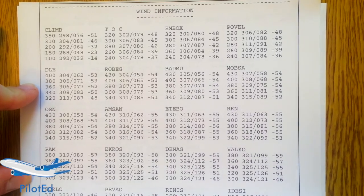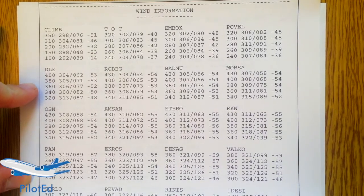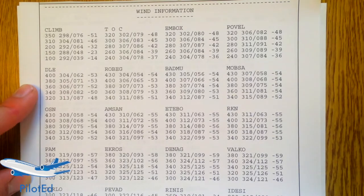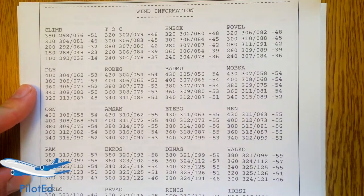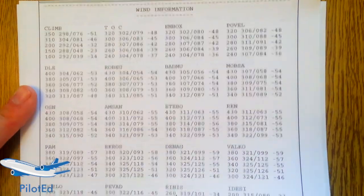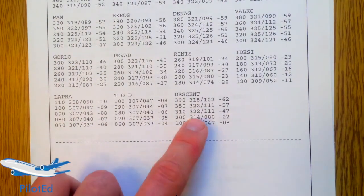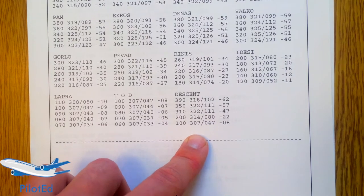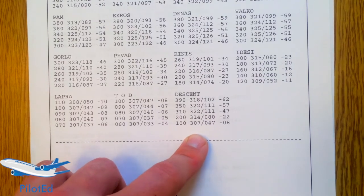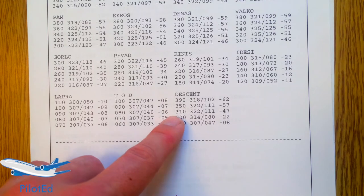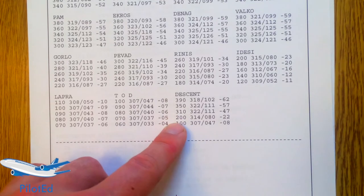On the next page we have a whole bunch of wind information at various altitudes at various points along our route. LIDO has basically done all the analysis for us, knowing where we'll get a better fuel burn and better time to destination. The important winds we program manually into the FMC are the descent winds from about FL310 down.